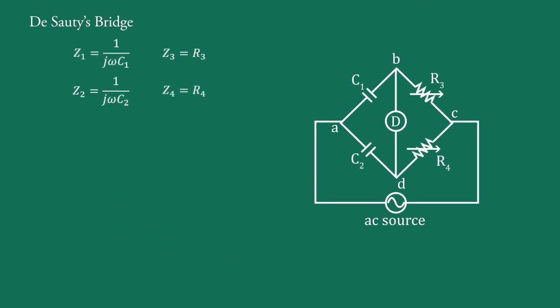Using bridge balance condition that is Z1·Z4 = Z2·Z3, we can obtain 1/(jωC1) × R4 = 1/(jωC2) × R3. Simplifying that is cancelling the jω on both sides of the denominator, we get R4/C1 = R3/C2, or C1/C2 = R4/R3.